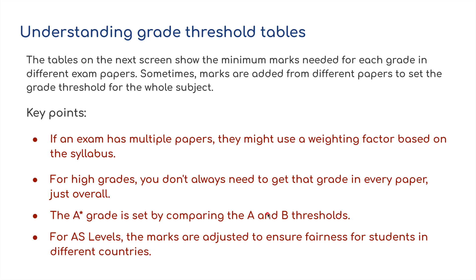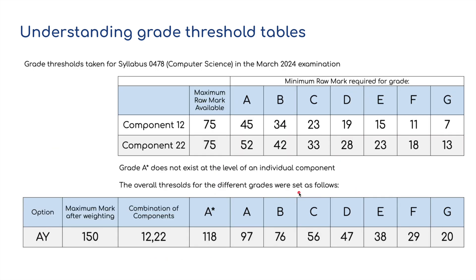The A-star grade is set by comparing the A and B thresholds, and for AS levels the marks are adjusted to ensure fairness for students in different countries. Looking at March 2024, this is for the 0478 Computer Science syllabus — component paper one and component paper two, both 75 marks. If you were to get over 45 marks in paper one and over 52 marks in paper two, we'd be looking at a grade A. There's A-X, A-Y and A-Z depending on where you are in the world — six different time zones for the exam papers. If somebody sits an exam in Australia in the morning and then somebody sits the same exam in America, there's a massive time difference and someone in Australia could tell their friend in America all the answers. So different papers are for different time zones.